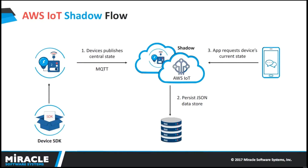Moving on to AWS IoT Shadow: this is also a major advantage introduced by the AWS IoT platform. It is a JSON document used to store and retrieve the current state information of a thing — a thing being a device. In AWS IoT terminology, a device is called a thing. This shadow is a complete copy or duplicate of the entire data and metadata structure of your device, maintained and managed completely by AWS IoT platform. No need to store it in a separate database — AWS IoT takes care of everything.